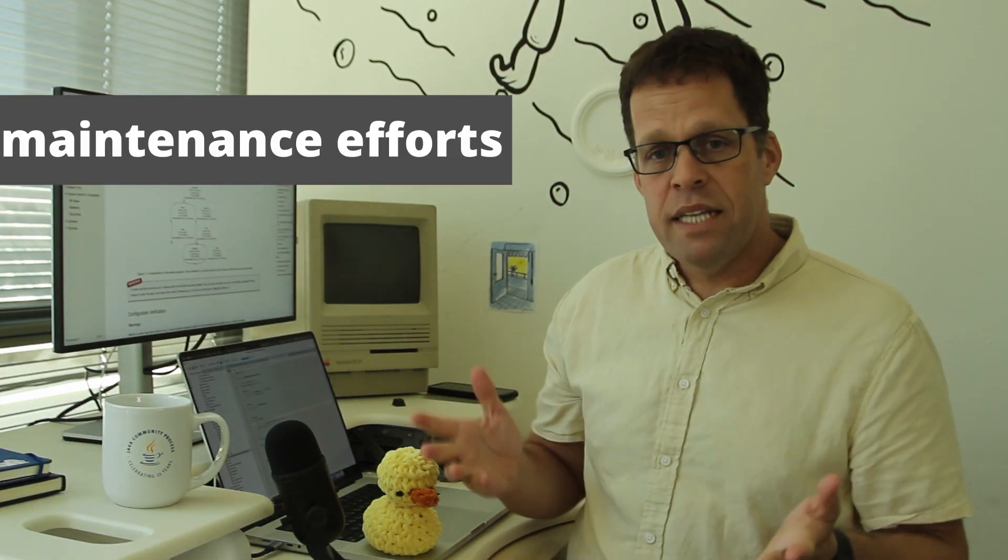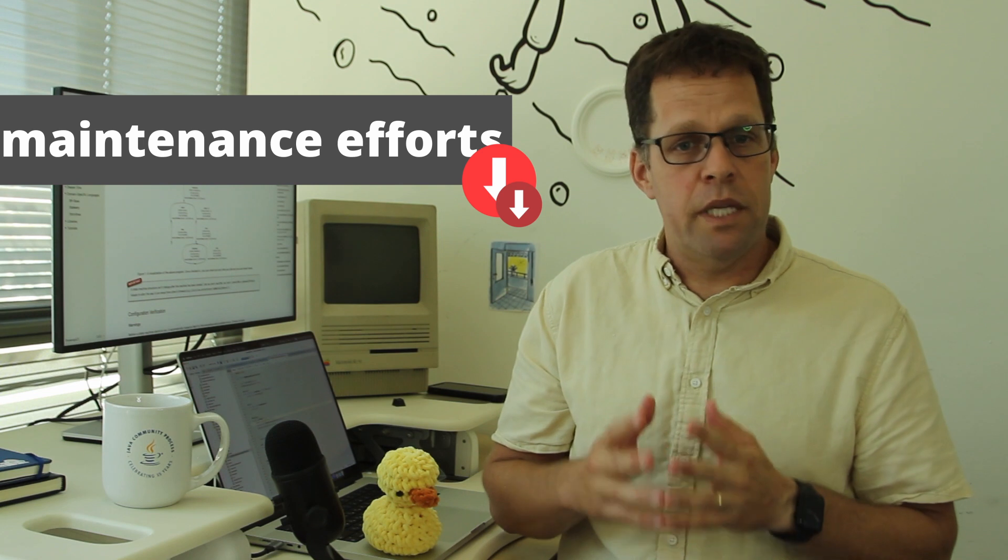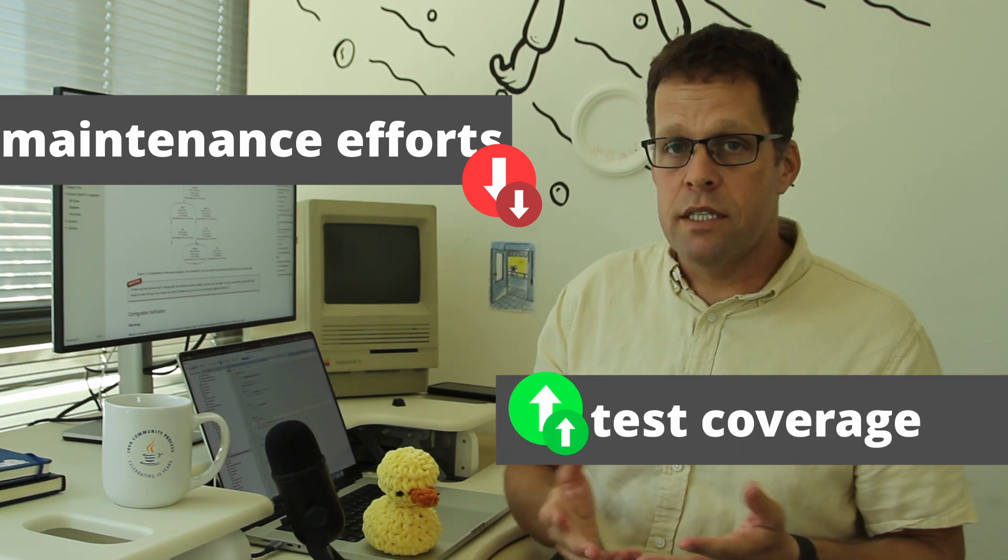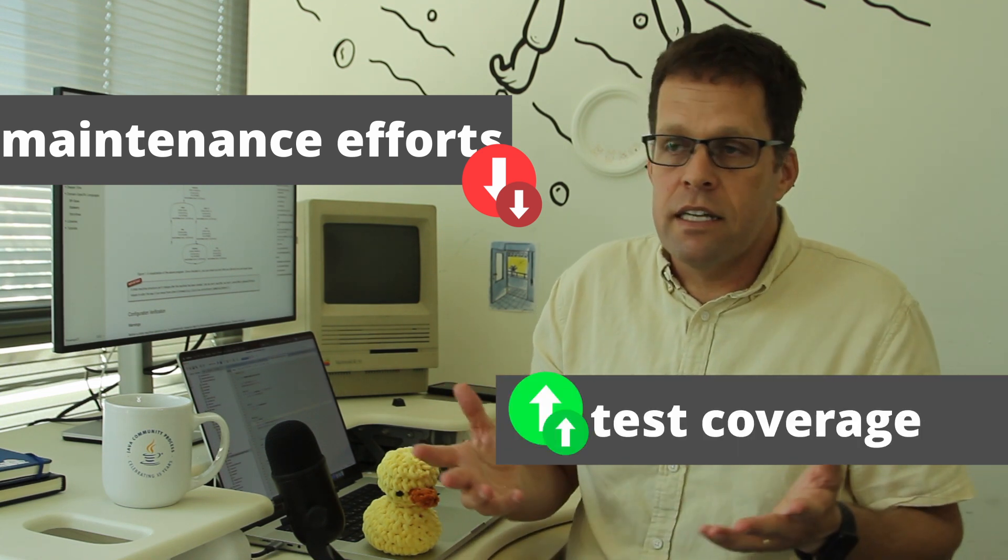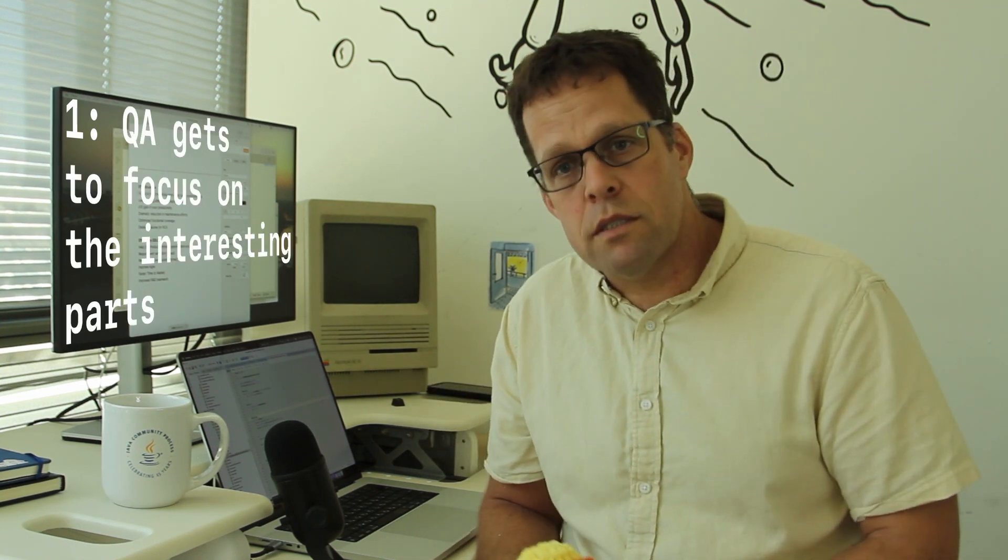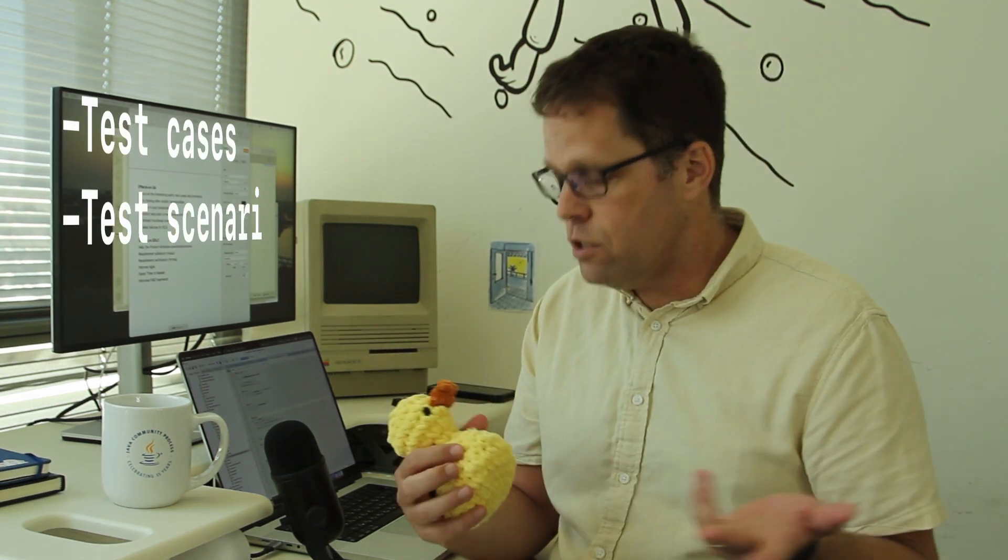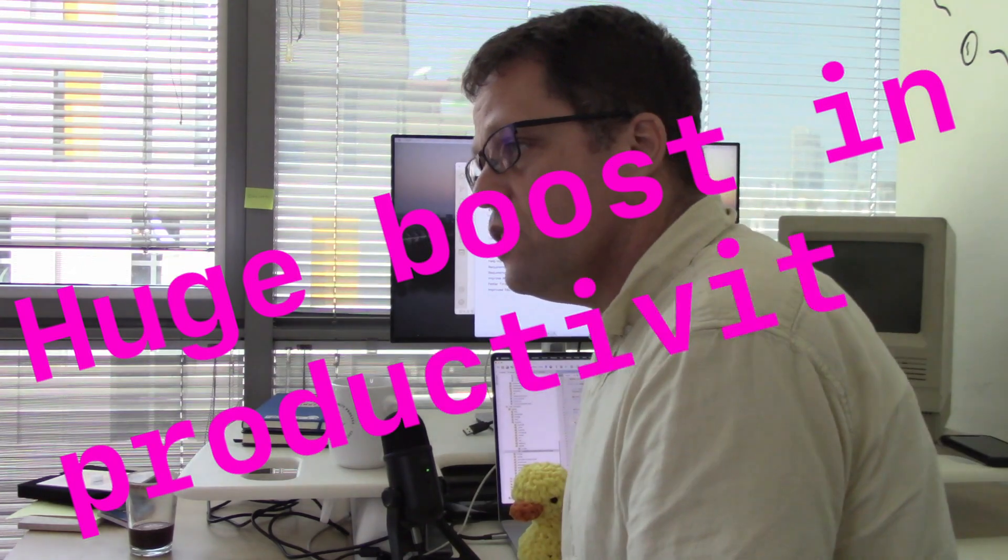And then throws all the tests that we had and regenerate a new updated set of tests. This way, maintenance efforts are reduced to a minimum, while test coverage becomes more comprehensive and actually takes less effort. So, let's see how model-based testing affects QA. First of all, QA gets to focus on the interesting parts. Test cases, test scenarios, rubber duckies, and doesn't have to chase as much after changes in scripts and automation and script maintenance, stuff like that. You get a huge boost in your productivity because of this.